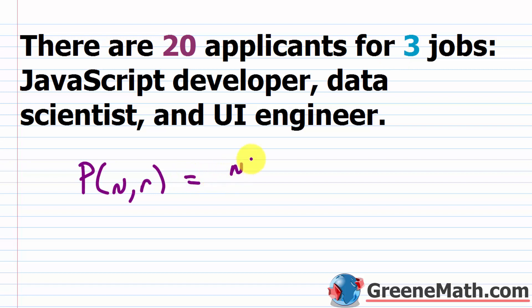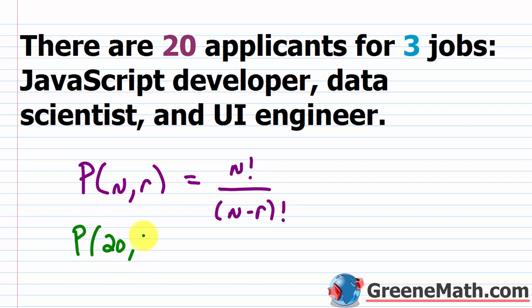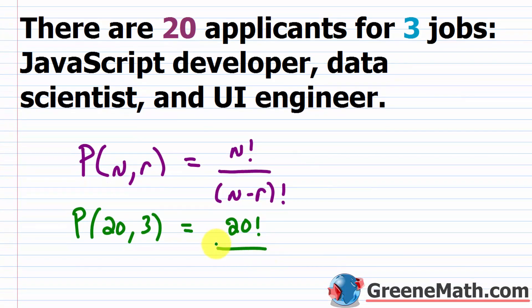The permutation formula is P(N, R) equals N factorial over (N minus R) factorial. So in this case, we have P(20, 3), which equals 20 factorial over 17 factorial. This key is on your calculator if you're using a TI-83 or 84.